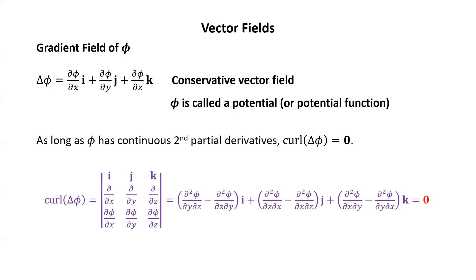Here is the verification: the curl of the gradient of phi. In the determinant, the bottom row has ∂φ/∂x, ∂φ/∂y, ∂φ/∂z. When we evaluate this determinant, we get the second partial of phi with respect to y then z, minus the second partial of phi with respect to z then y, times i. Since phi has continuous second partial derivatives, by Clairaut's theorem those two are equal, so the difference is zero. The same thing happens with the j and k components, so we wind up with the zero vector.